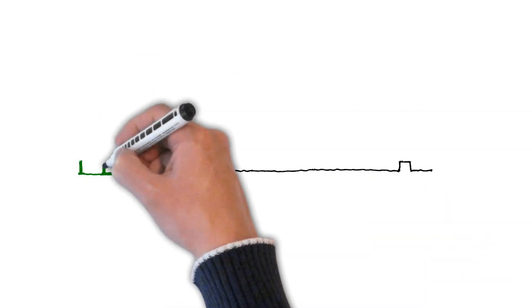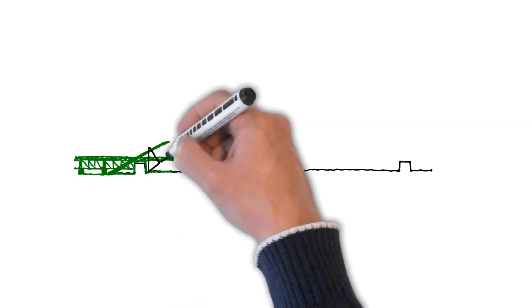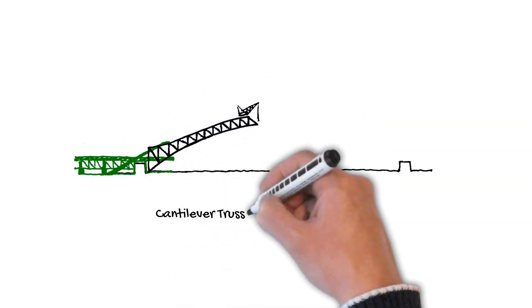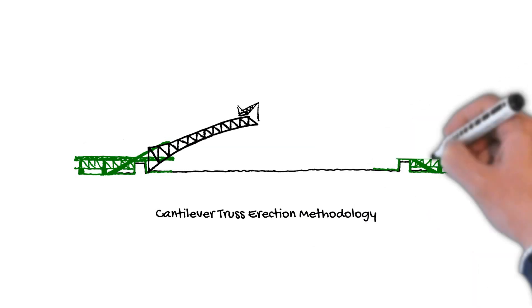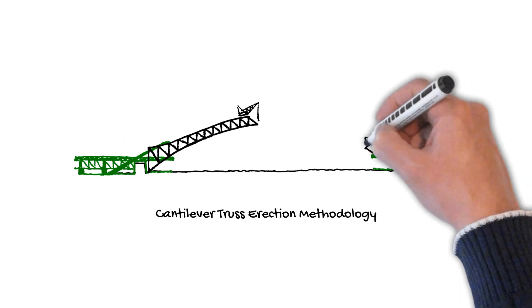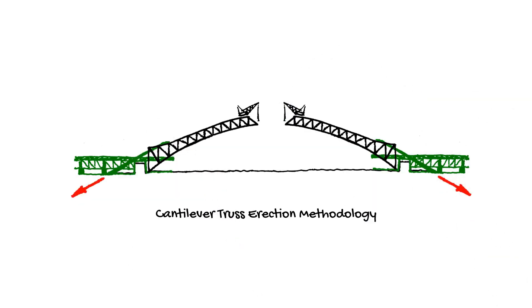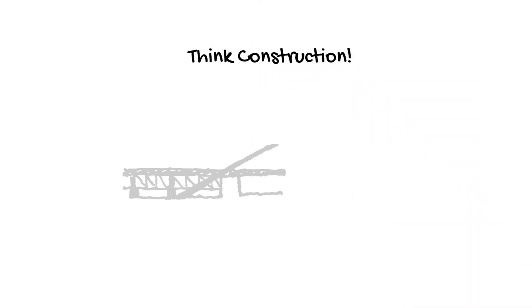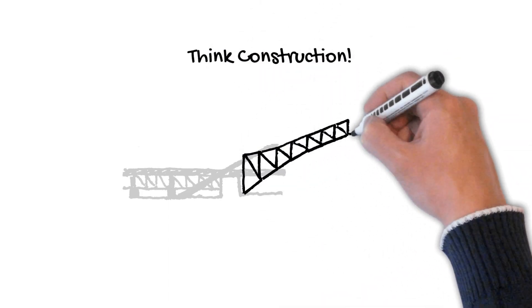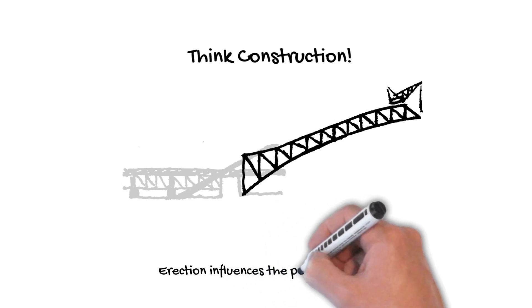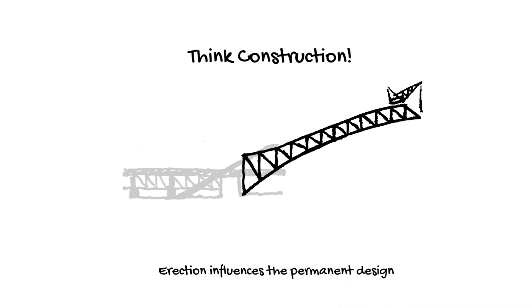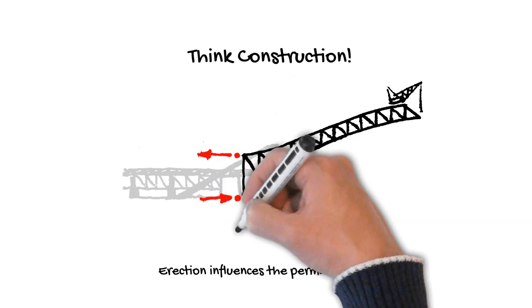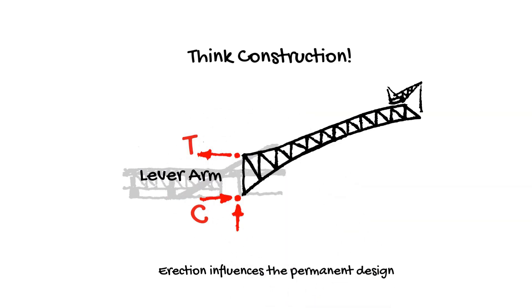The answer lies in the way the bridge was constructed in progressive cantilever levering from both ends. This meant that the arch experienced large flexural demands during erection at the supports. The top cord tension was anchored to the ground through temporary works. The Sydney Harbour Bridge is an excellent demonstration of the practice of think construction, where the erection methodology has an influence on the permanent design and configuration of the bridge. The large lever arm at the supports was required to resist the cantilever moments during erection — the Harbour Bridge, an integral part of the Sydney skyline.